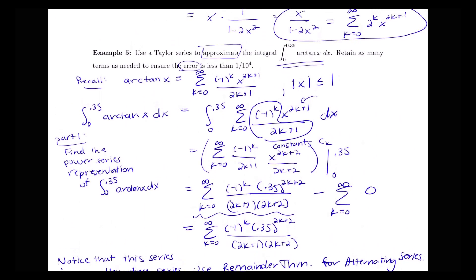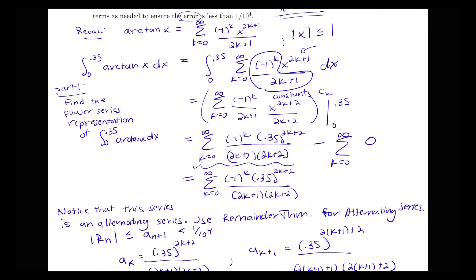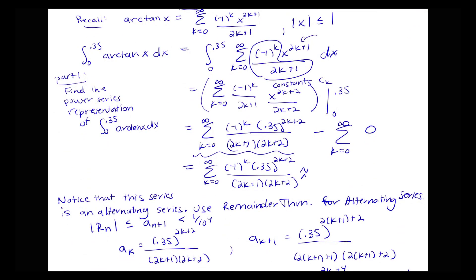We can therefore approximate our definite integral as the sum of the k equals 0 and k equals 1 terms: 0.35 squared all over 2, minus 0.35 to the fourth all over 12. This is the approximate value of the definite integral with an error bound no more than 1 over 10 to the 4th.